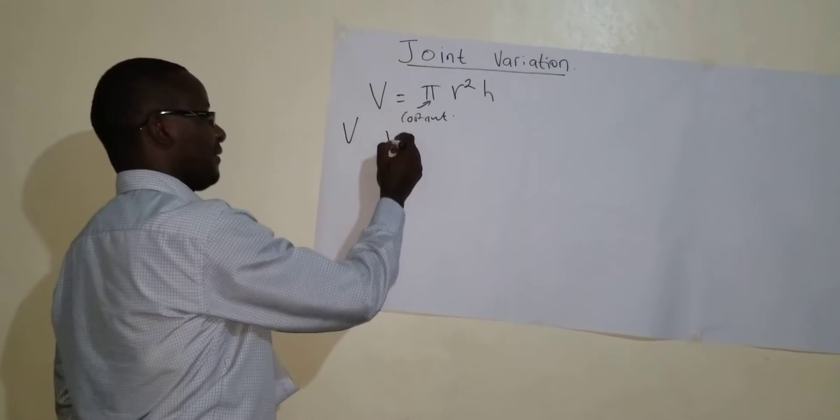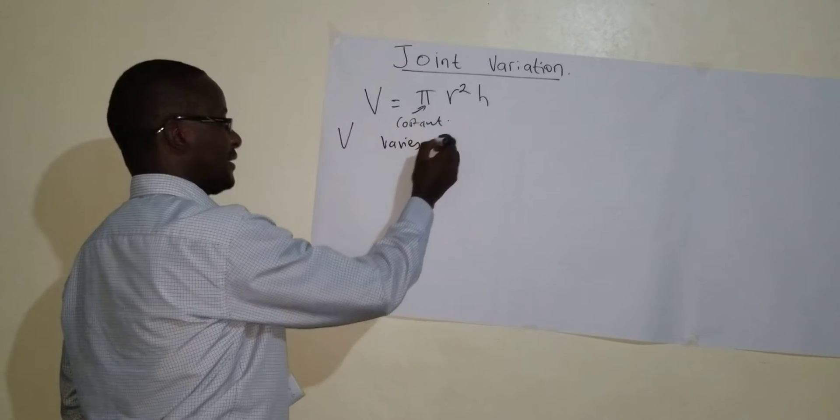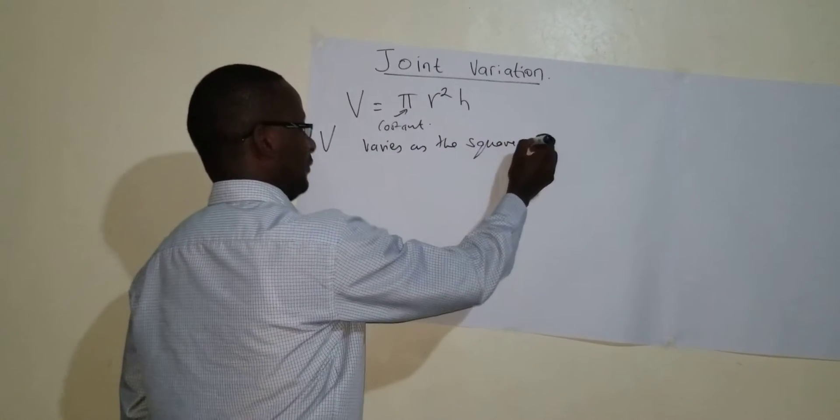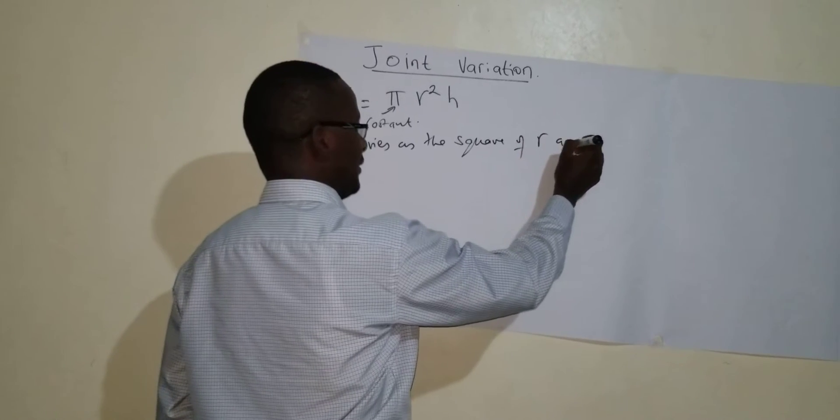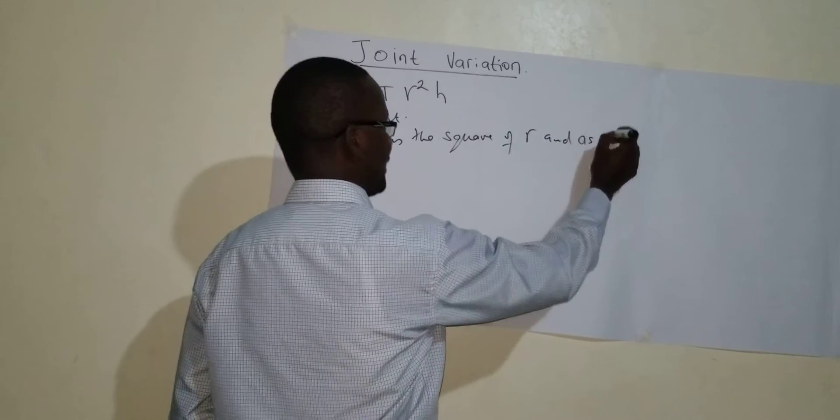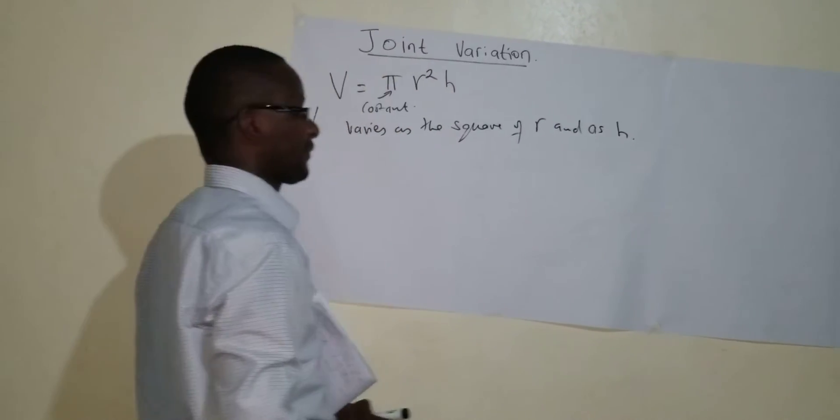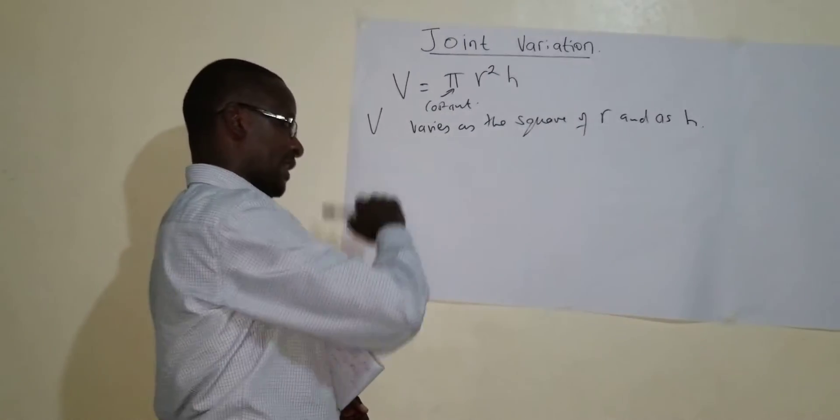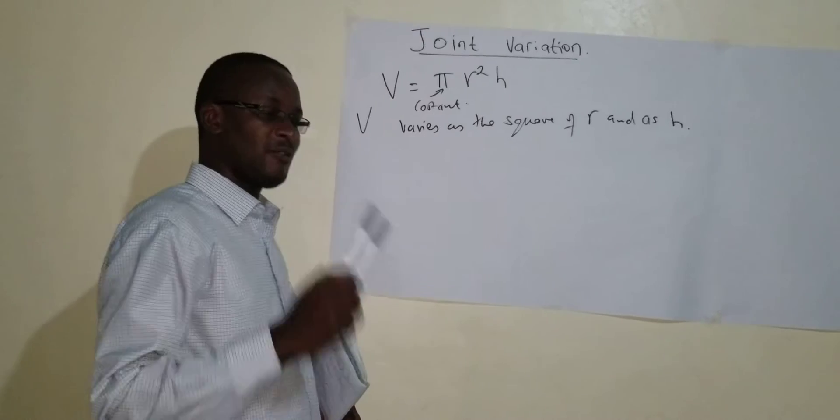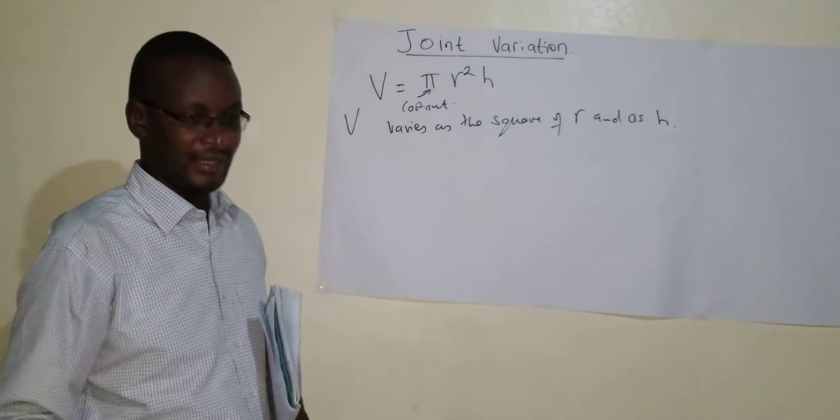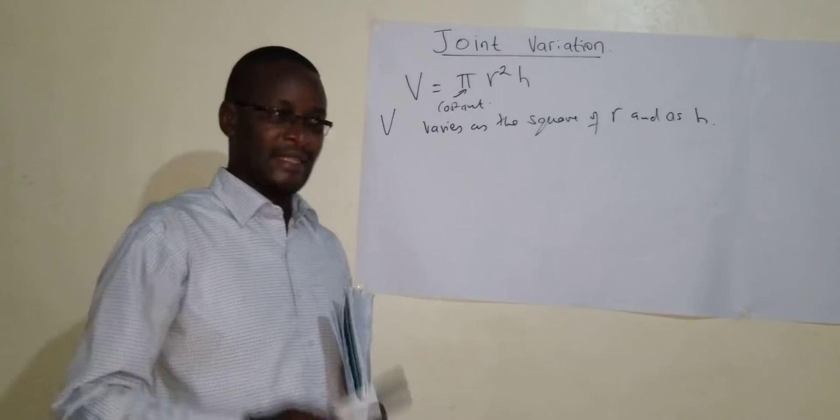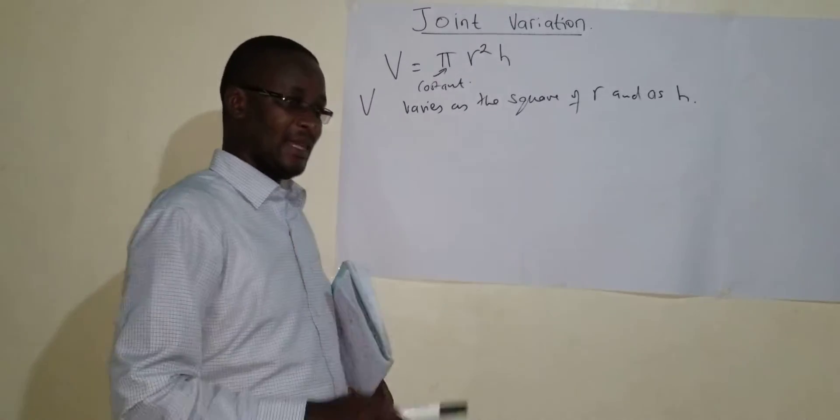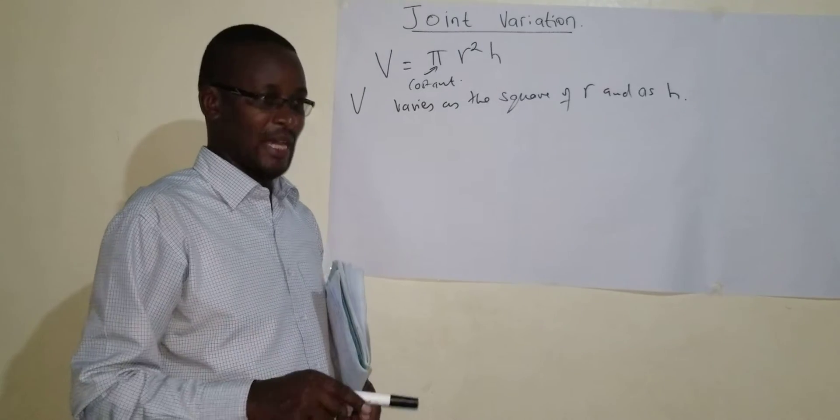So we can write V varies as the square of R and as H. The moment we put the word varies here and we have not put the word inverse, then it means direct. So if the word inverse does not appear, then the type of variation is direct. Please note that.